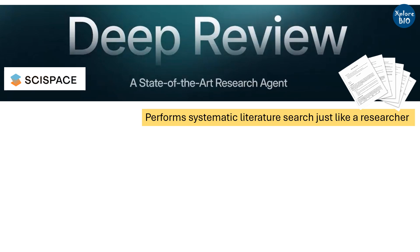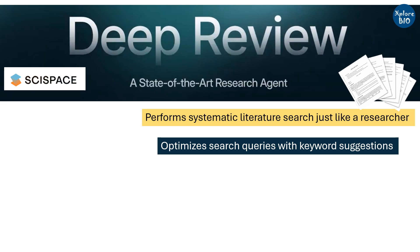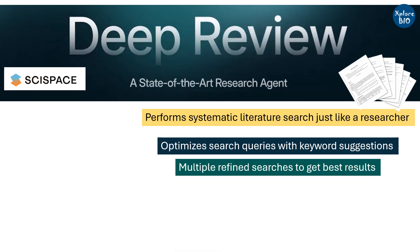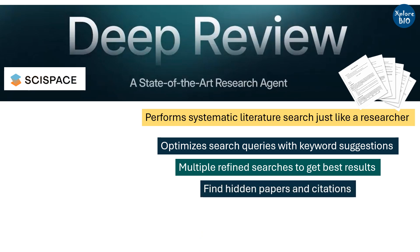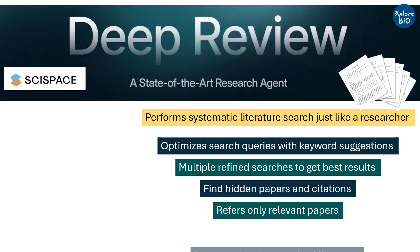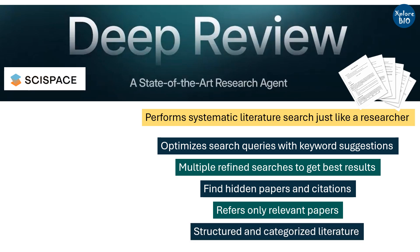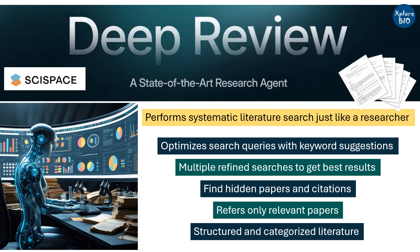Let's see how Deep Review does this and what makes it different from other tools. First, Deep Review optimizes the search query using improved keywords. Second, it runs multiple refined searches which improves the results it generates. It also refers to hidden papers and citations that can be of high relevance and are worth considering. Another important thing is that it knows when to stop — it shows only the most important papers and won't suggest any irrelevant literature. Last but not least, all the papers provided are structured and categorized for more clarity. Deep Review is just like a researcher performing different kinds of searches and refinements to get the most relevant literature, without taking too much of your time.